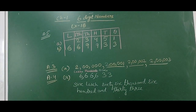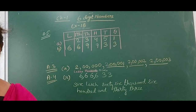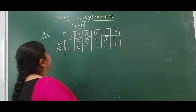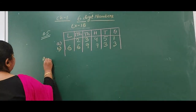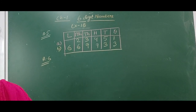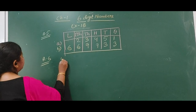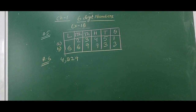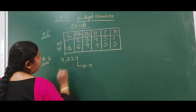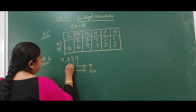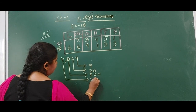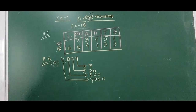Question number 6: you have to write the place value of each digit. The number is 4,829. We start with 9 — 9 is in the ones place, so it will be 9. 2 is in the tens place, so it will be 20. 8 is in the hundreds place, so it will be 800. And 4 is in the thousands place, so 4,000. In this way you will complete the rest of the digits.